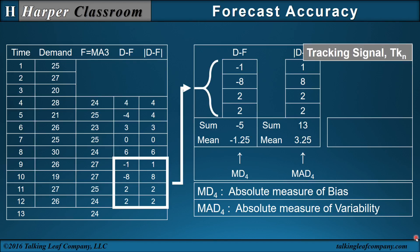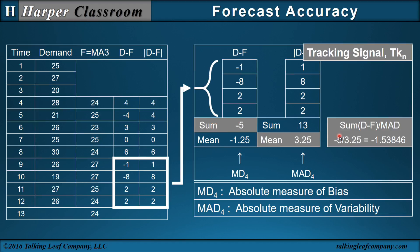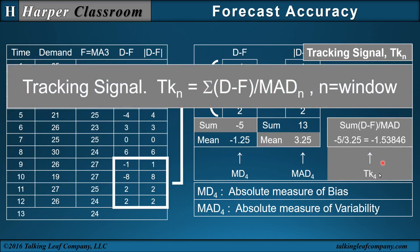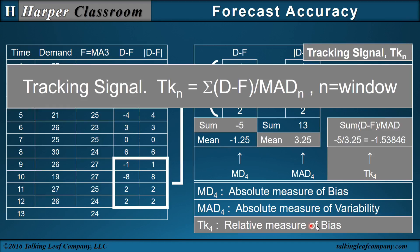Our third measure is a tracking signal, which is a ratio. The numerator is the sum of the deviations — minus five — and the denominator is the MAD, or mean absolute deviation, 3.25. So that ratio is minus 1.53846, and that's our tracking signal with a window of four. Since the numerator is the sum of the deviations, which is a measure of bias, the tracking signal is also a measure of bias — but a relative measure of bias. Let me illustrate the difference between a relative and absolute measure of bias with an example.